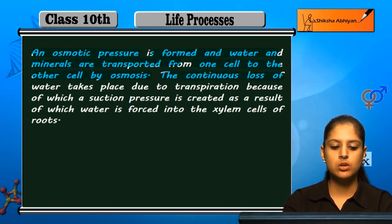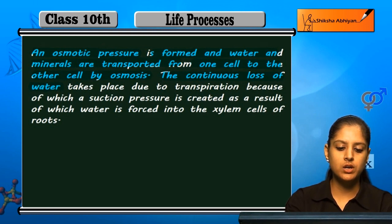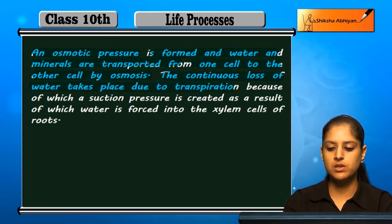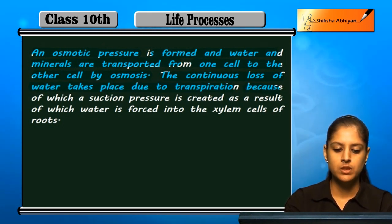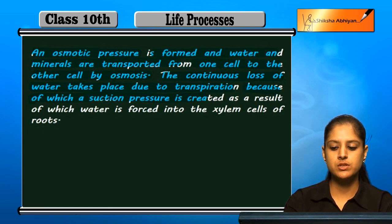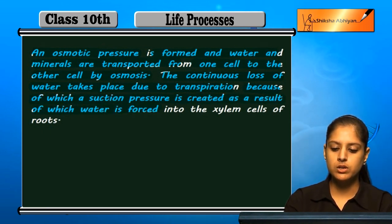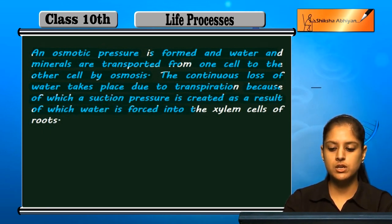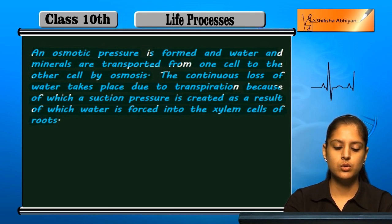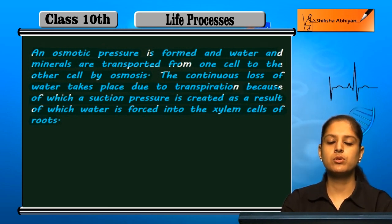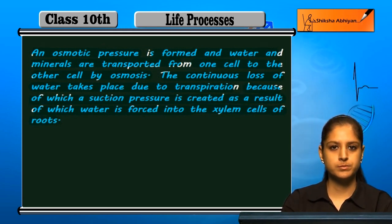The continuous loss of water takes place due to transpiration, because of which a suction pressure is created. As a result of this suction pressure, water is forced into the xylem cells of the roots, and water transport begins.